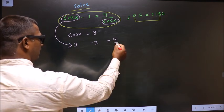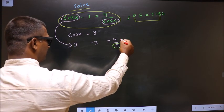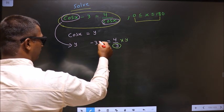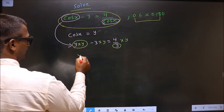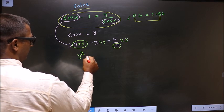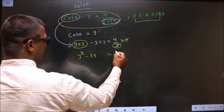Now we should get rid of this denominator y. For that, you multiply by y to each. So now we get y into y: y square minus 3y, equal to—this cancels out—you get 4.